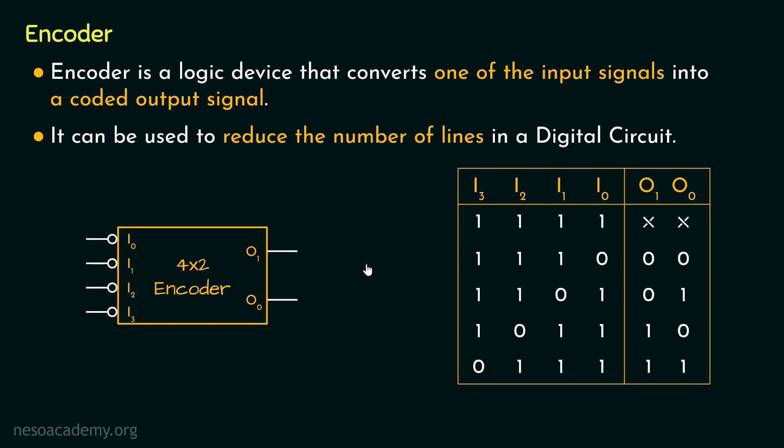But generally, in case of digital integrated encoders, both the inputs and the outputs are active low. So if we convert the output lines as active low output lines, in the truth table, the output sequences will be toggled.